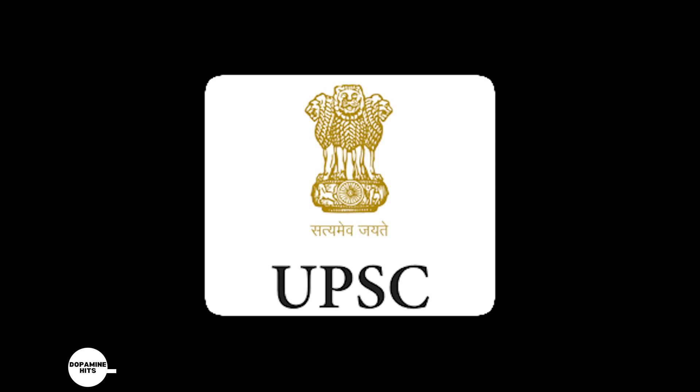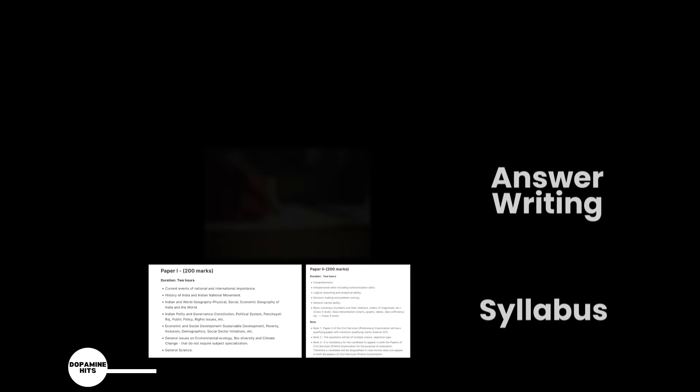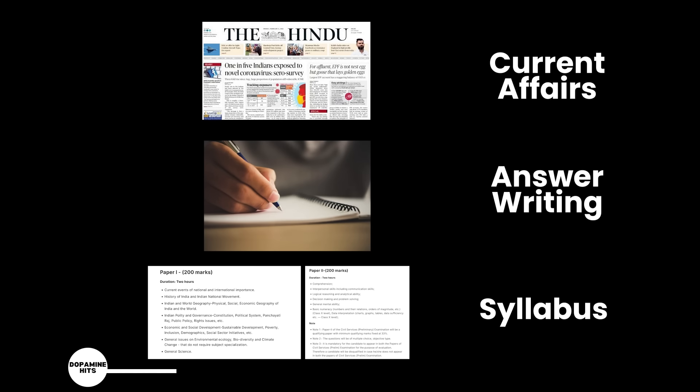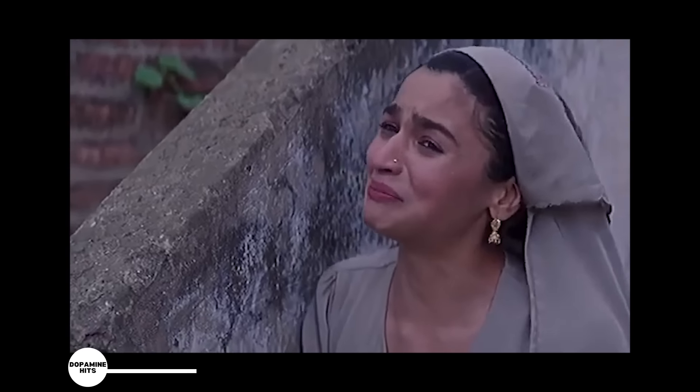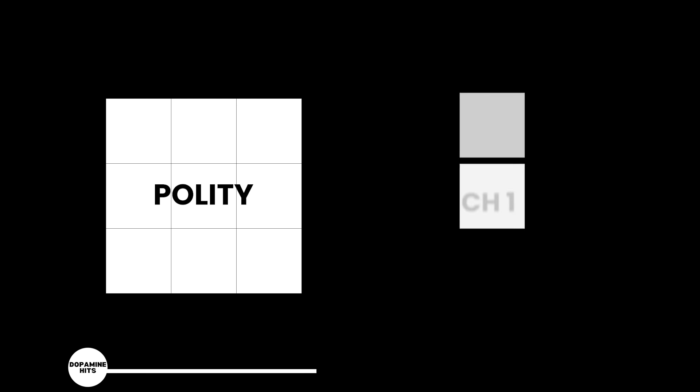UPSC preparation can feel overwhelming because you have to do so many things. The syllabus is so vast, there are so many subjects, answer writing bhi karna hai, current affairs bhi karna hai. In such a case, the most important thing is that you set small, achievable daily targets. Take big topics and break them down into smaller pieces. For example, let's say you have to do polity. Don't just say today I have to do polity. Be very specific: today I have to do these particular chapters of polity, and once you cover them, tick.